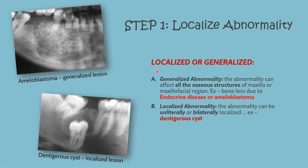If the lesion is generalized, the abnormality can affect all the osseous structures of the maxilla or maxillofacial region — for example, bone loss due to endocrine disease or ameloblastoma. From the picture you can easily see the lesion is generalized, spreading and present in more than one tooth in the mandible. In a localized abnormality, the abnormality can be unilateral or bilateral. In this image you can see it is unilateral and affecting one tooth — this is a picture of a dentigerous cyst, a localized lesion.